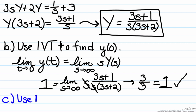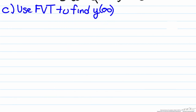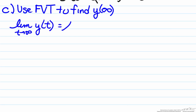Part C asks us to use the final value theorem to find the steady state value of y — in other words, the value of y as it approaches infinity. The nice thing about using the final value theorem is that we can determine the steady state value of the system without having to do any potentially complicated partial fractions or mathematical analysis; all we need is this variable in the y domain. The final value theorem states that the limit of y of t as t goes to infinity equals the limit as s approaches zero of s times y of s. The convenient thing is that we can determine our steady state limit as t goes to infinity without actually calculating y of t, which we have yet to do.